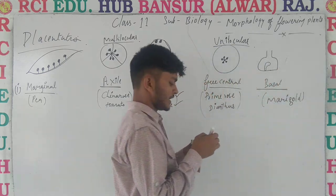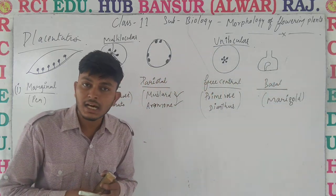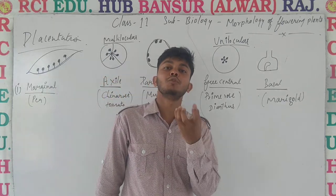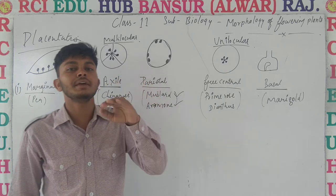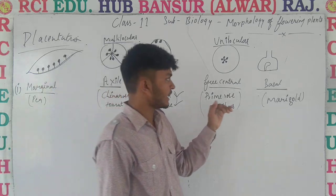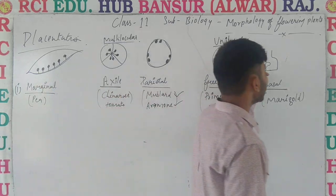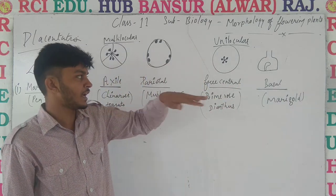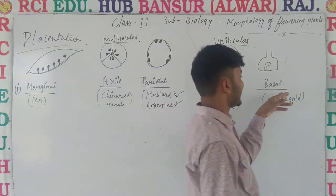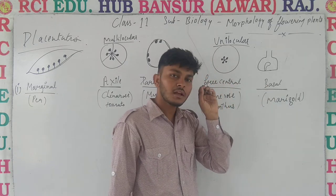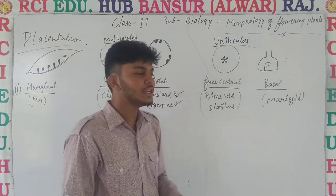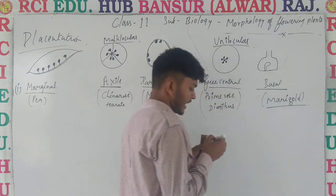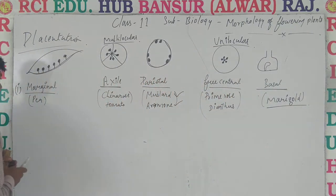Last, we talk about basal placentation. ऐसा arrangement — ऐसा placentation जिसके अंदर formed ovules are found at the base of the ovary. Ovary के base में पाये जा रहे हैं, नीचे आधार से चिपटे हुए हैं. That type of arrangement is known as basal placentation, and this is found in marigold.